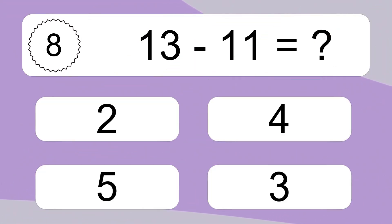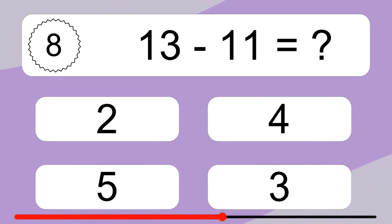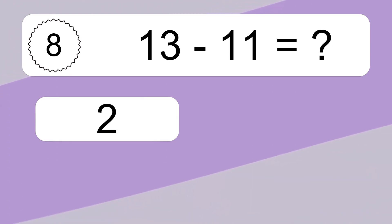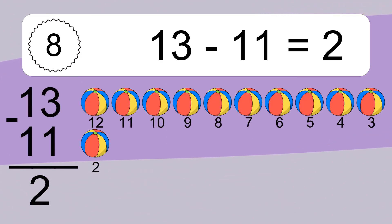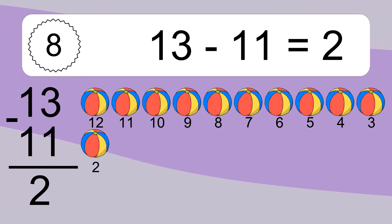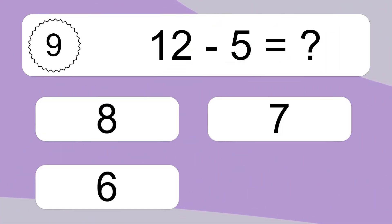13 minus 11 equals what? 13 minus 11 equals 2. Let's count it. 12, 11, 10, 9, 8, 7, 6, 5, 4, 3, 2. 12 minus 5 equals what?